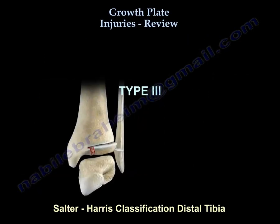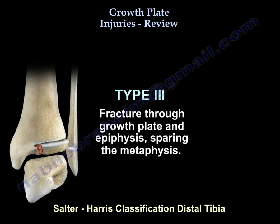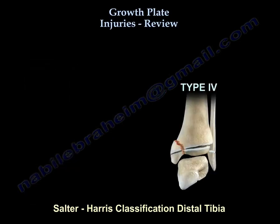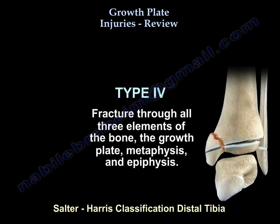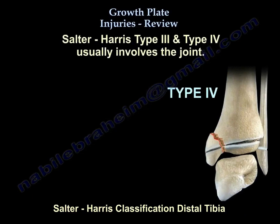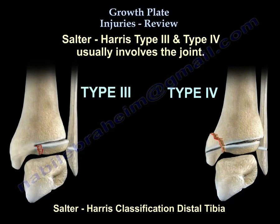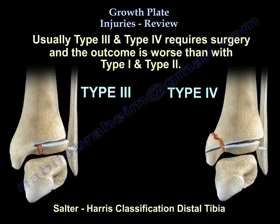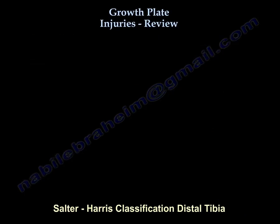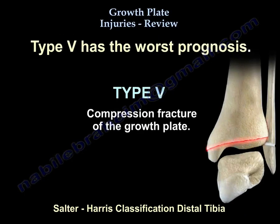Type 3 fractures through the growth plate and the epiphysis, sparing the metaphysis. Type 4 fractures through all three elements: the growth plate, the metaphysis, and the epiphysis. Type 3 and 4 usually involve the joint, require surgery, and the outcome is worse than with type 1 and 2.